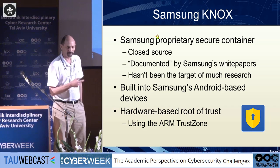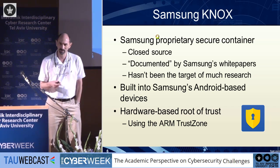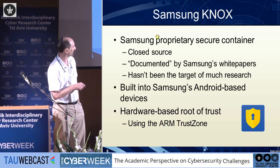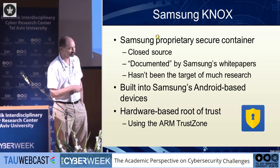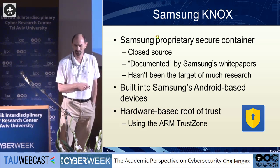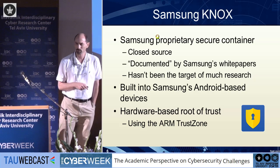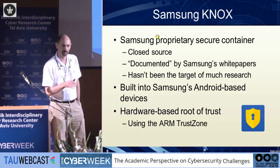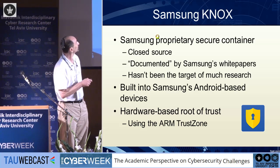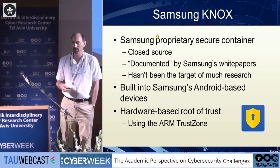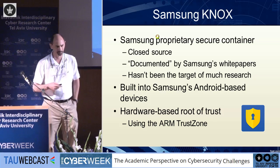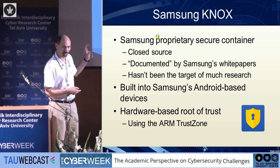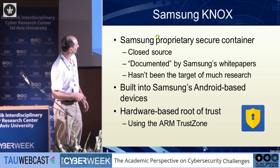An interesting feature and one of the big advantages of Knox over other solutions is that it's based on a hardware root of trust — specifically the ARM TrustZone. Most cell phones, certainly all Samsung phones, use a CPU made by ARM, and ARM has built a thing called TrustZone, which is a security component in the hardware. Samsung Knox relies on that, which is a good thing from a security point of view. It's one of their major advantages over, for instance, Google's solution, which is totally software-based.